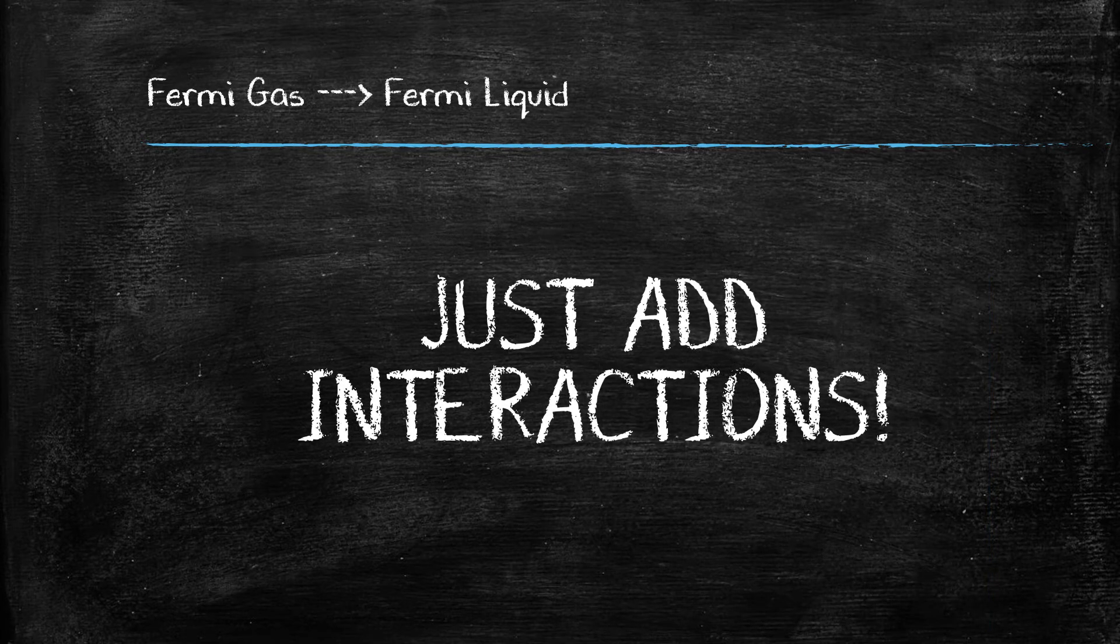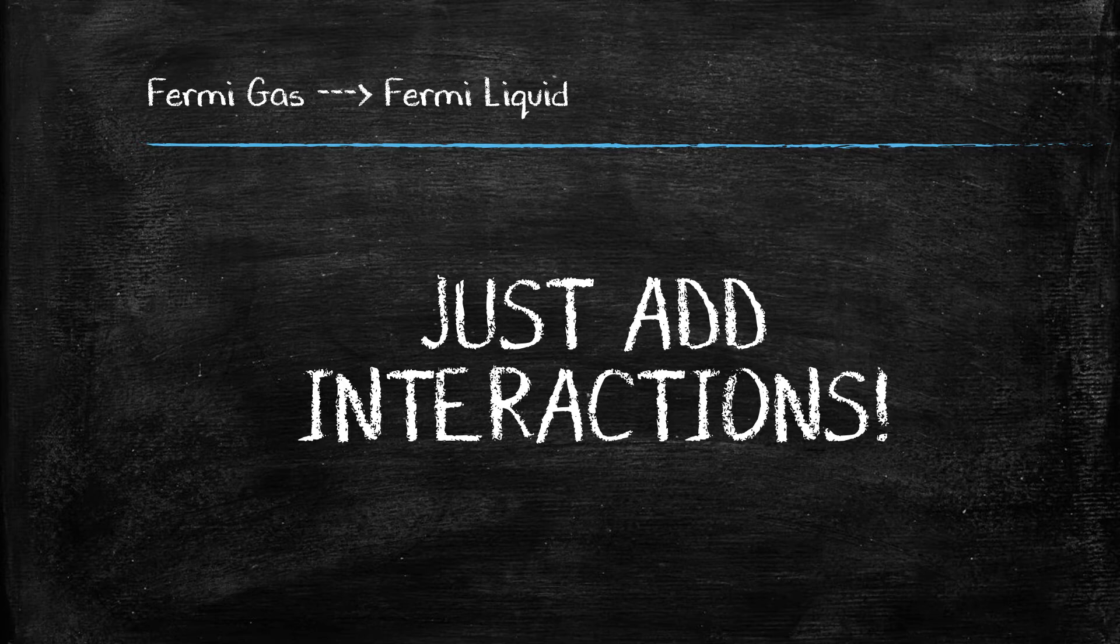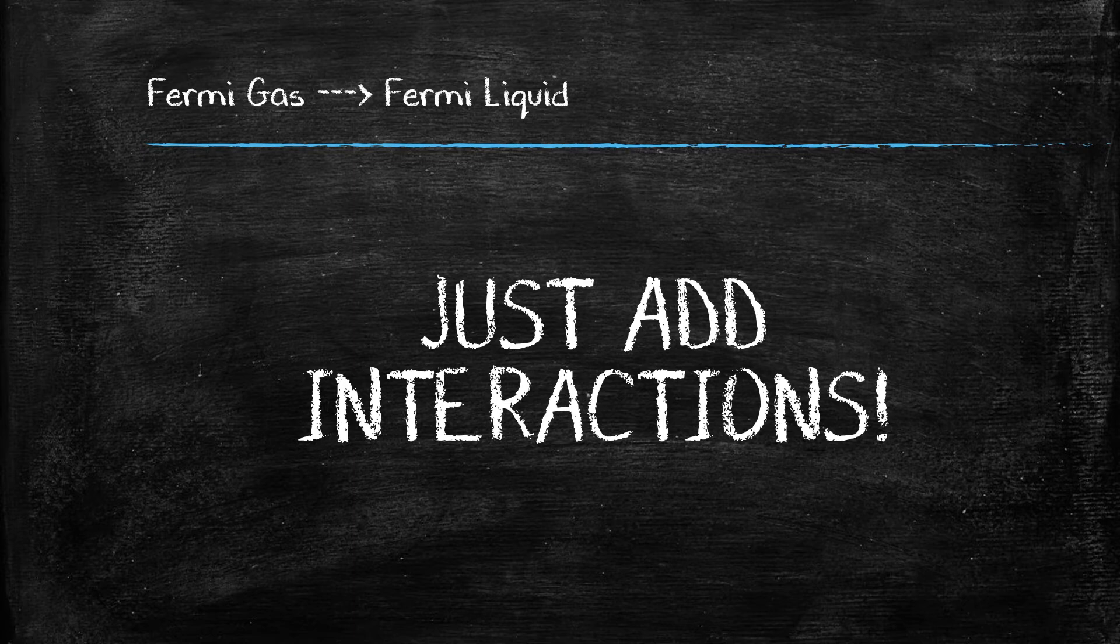So up until now, we have just been discussing the simplified case when there is no interaction among the electrons. The dependence has been mostly on temperature of the conductor we are studying, but what happens when you add interactions? Well, then you get the Fermi liquid theory.